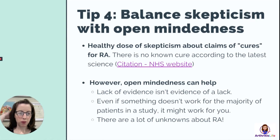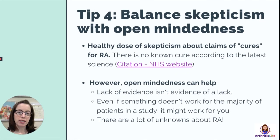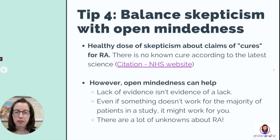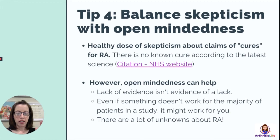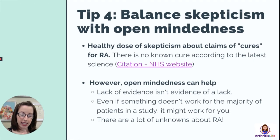Tip four is to balance skepticism with open-mindedness. In general, there are no known cures for RA that will work for everyone. That doesn't mean that one person trying a diet and it working for them is invalid — it just means there's no overall cure that will make the disease go away for everyone. The NHS and every valid website confirms there is no actual cure for RA at this time. However, I've really had to balance that skepticism with open-mindedness in my own life.